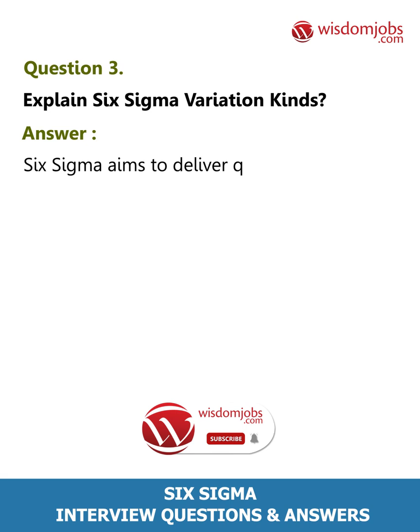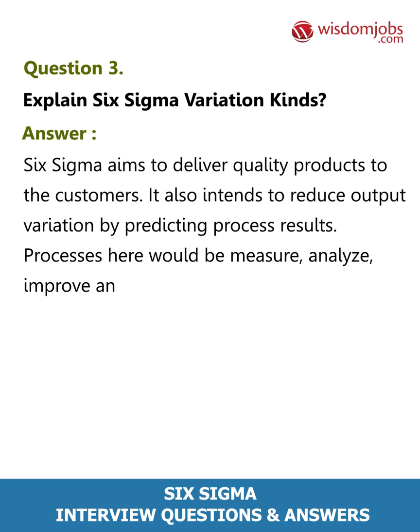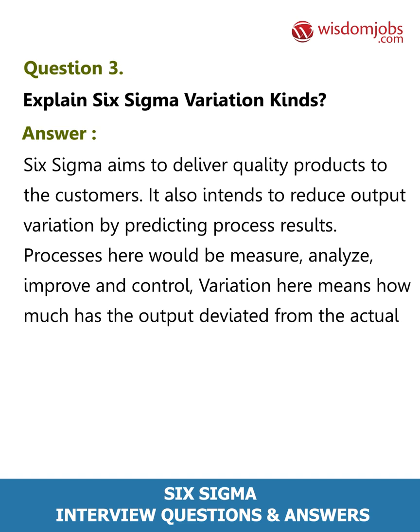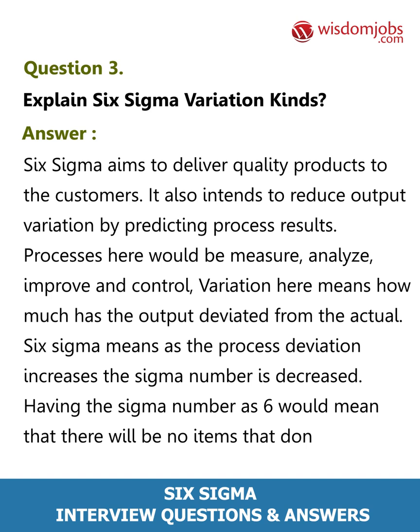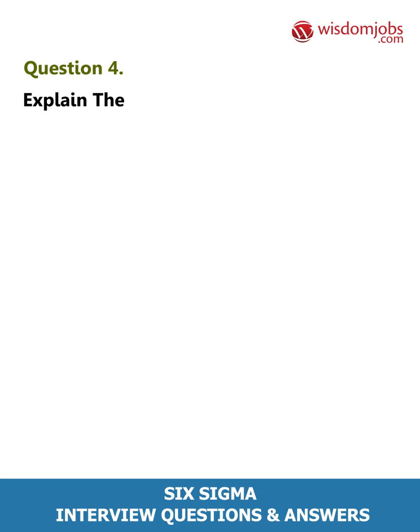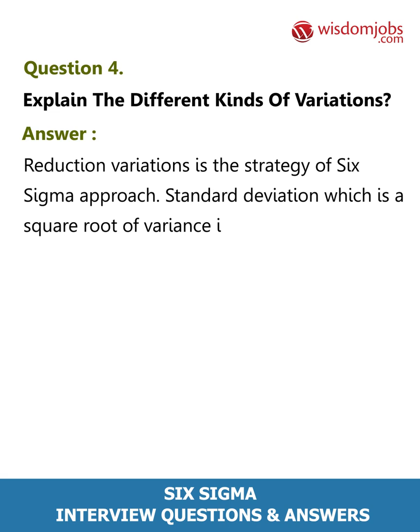Question 3: Explain Six Sigma variation kinds. Answer: Six Sigma aims to deliver quality products to customers. It also intends to reduce output variation by predicting process results. Processes here would be measure, analyze, improve, and control. Variation means how much the output has deviated from the actual value. As process deviation increases, the sigma number decreases. Having a sigma number of 6 means there will be no items that don't meet specifications.